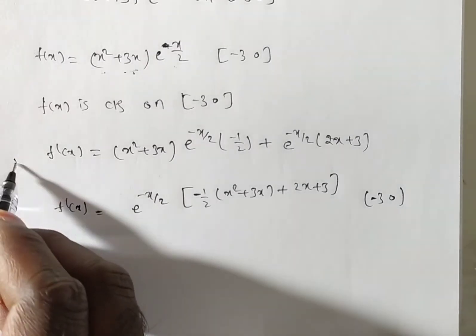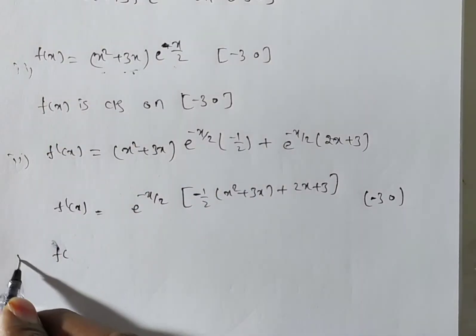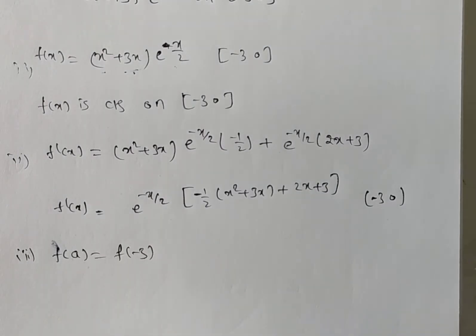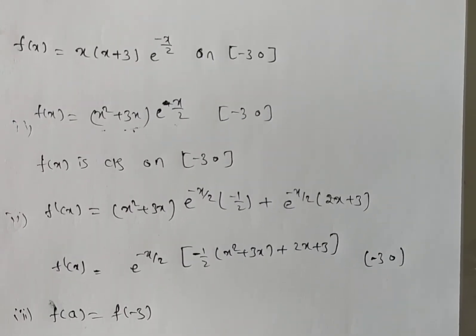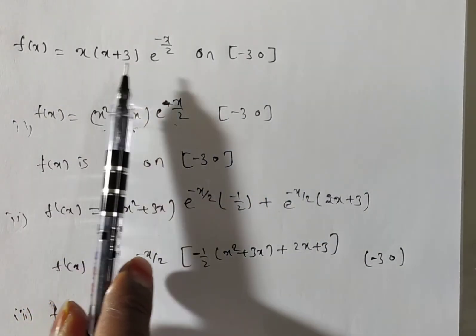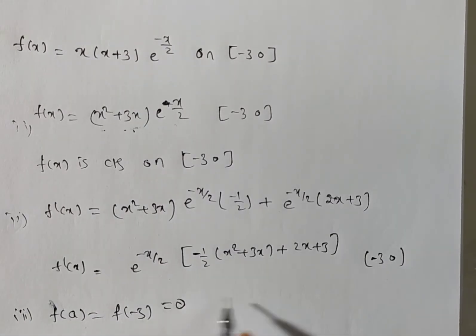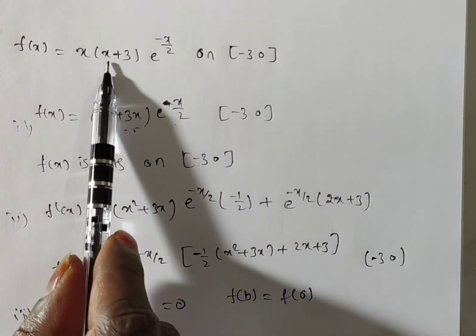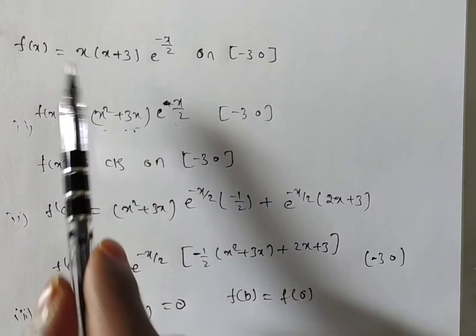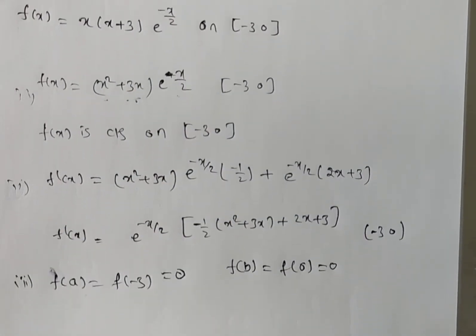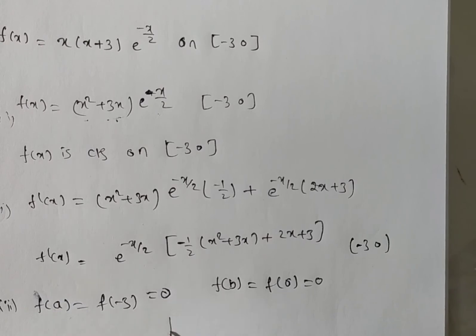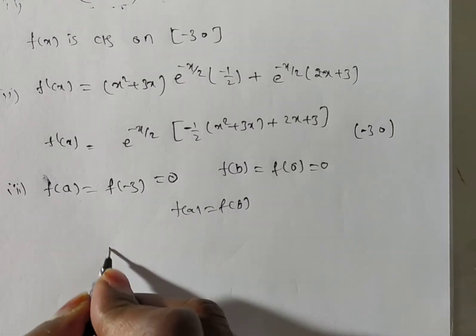Now we verify the third condition. f(a) = f(−3): substituting x = −3, we get (−3)(−3 + 3) · e^(3/2) = (−3)(0) · e^(3/2) = 0. f(b) = f(0): substituting x = 0, we get 0 · (0 + 3) · e^0 = 0. So f(a) = f(b). Therefore Rolle's theorem is applicable.